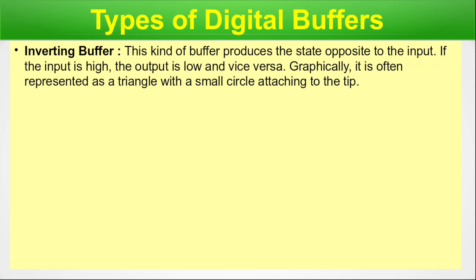Types of digital buffer. The types of digital buffer are very important. This is the slide where you will have the complete idea of buffers so that you can side-by-side compare them with the level shifters, because level shifters also have types. First, the inverting buffer: this kind of buffer produces the state opposite to the input. If the input is high, the output is low and vice versa. Graphically, it is represented as a triangle with a small circle on the tip — essentially a plain inverter circuit.